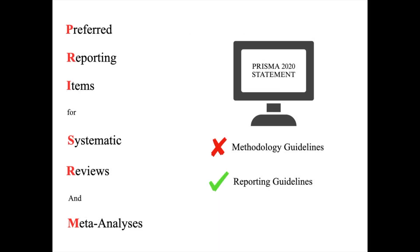Ultimately, PRISMA 2020 emphasizes the importance of a comprehensive report, including a detailed account of the search results, study selection process, and the synthesis of its findings. The flow diagram provides a visual representation of your review process, enhancing both transparency and reproducibility. Adhering to the PRISMA 2020 guidelines ensures that your systematic review will be robust, transparent, and useful for your target audience. For more information and resources on PRISMA 2020, visit the PRISMA.org website.